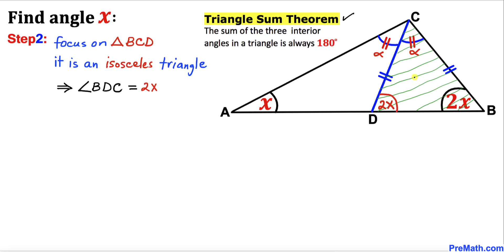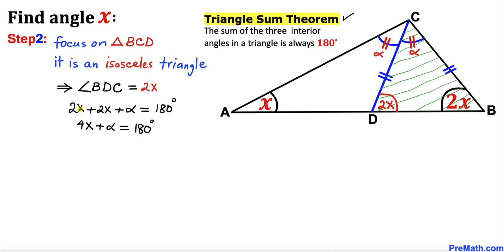Therefore we can write: 2x + 2x + alpha = 180 degrees. Simplifying, 4x + alpha = 180 degrees. Let's call this Equation 1.